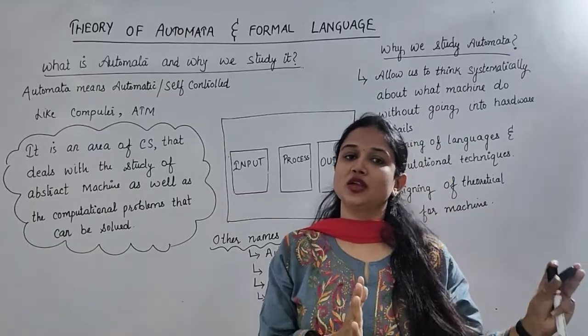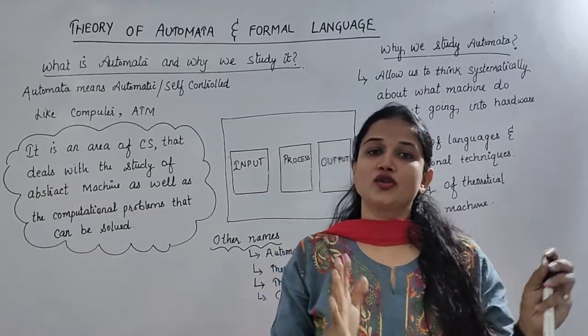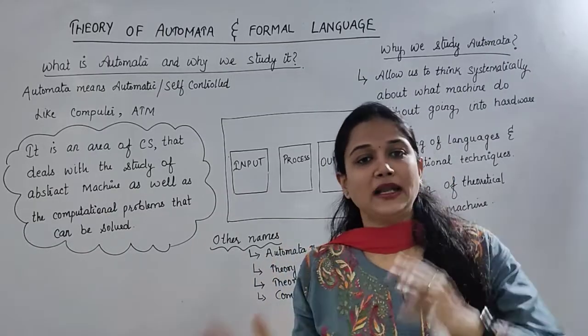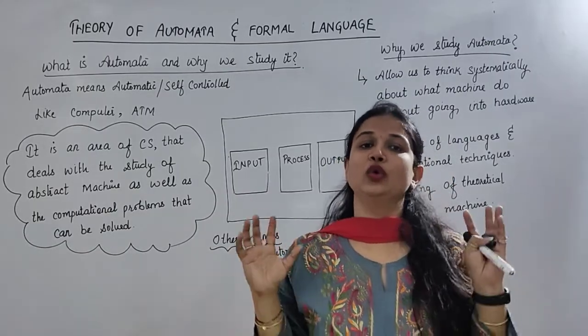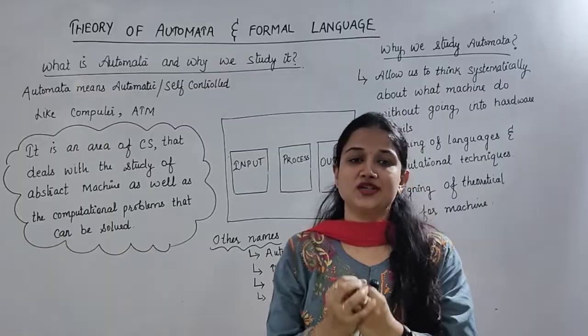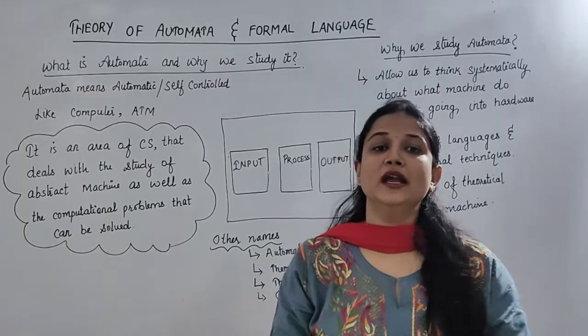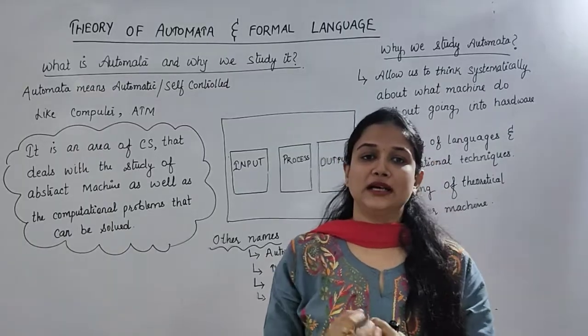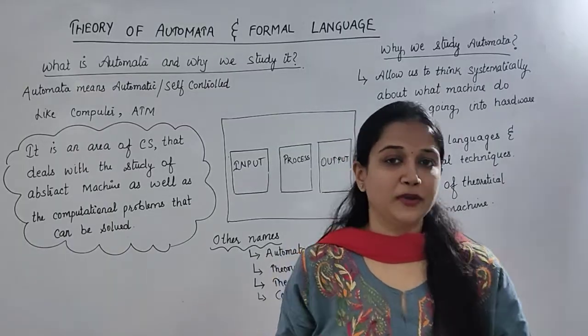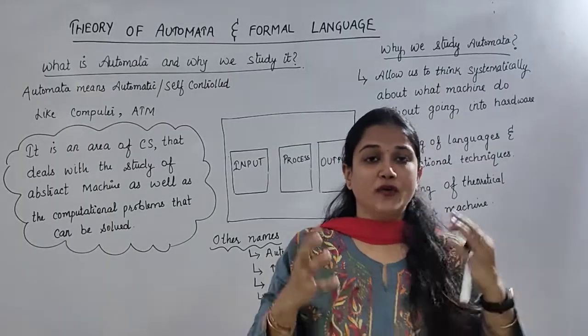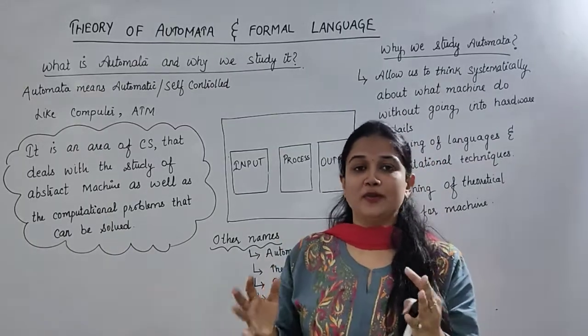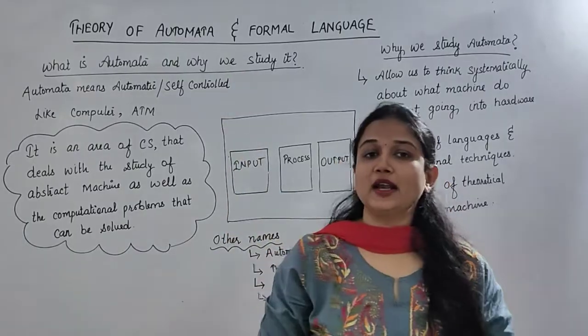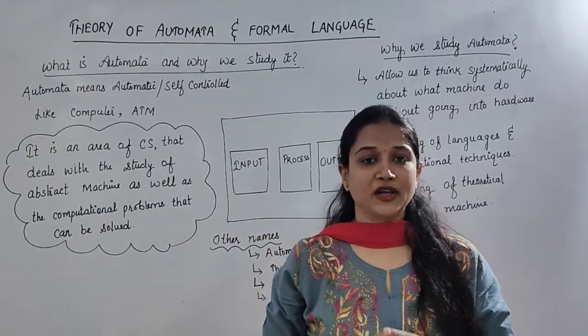So when there is a computational theory and an automatic theory, if we take the combination of the two, that makes a theory of computation. And that theory of computation is our automata.